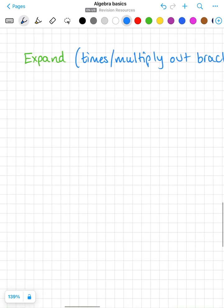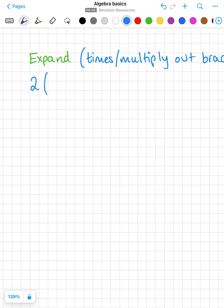So typically with expand questions we will see something that's being multiplied by stuff inside brackets. So when we've got a number on the outside of our bracket, all that means is we are timesing everything on the inside by what is on the outside. So that's 2 times x which is 2x, and 2 times 2 which is 4.